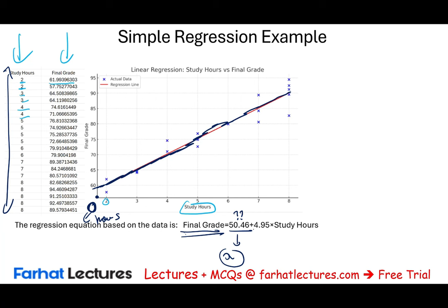Now, multiple regression is an extension of simple regression. In multiple regression we still have one dependent variable, but rather than one independent variable we can have more than one. It's used when multiple factors are believed to influence the outcome. The equation is: y = b0 + b1·x1 + b2·x2 + b3·x3 + … + e, where x1, x2, x3 are the independent predictor variables, the b coefficients show the effect of each predictor, and e is the error term.